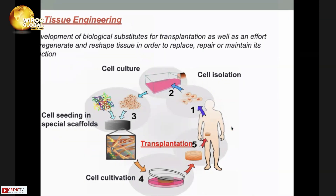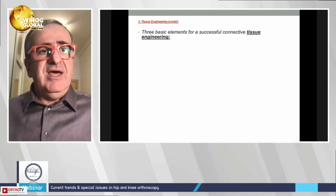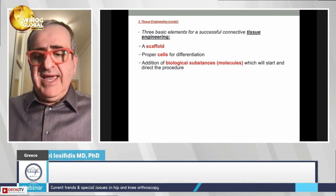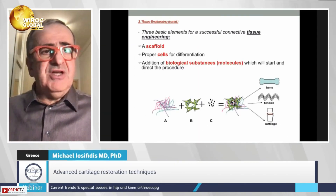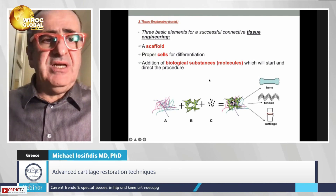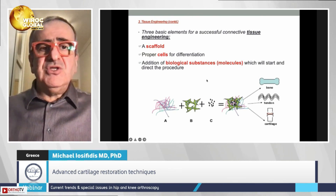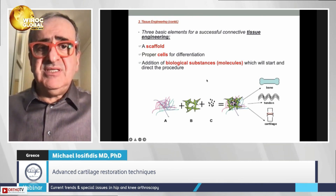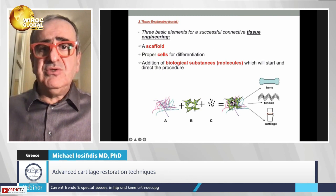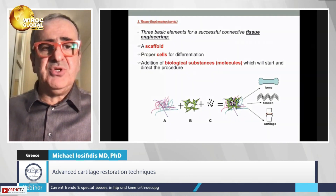In tissue engineering we must have three basic elements: first, a scaffold; second, the proper cells; and finally, some biological substances — molecules which will start and direct the procedure.